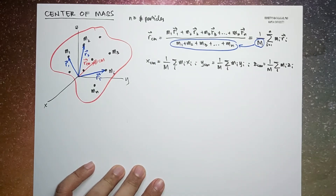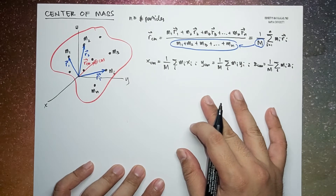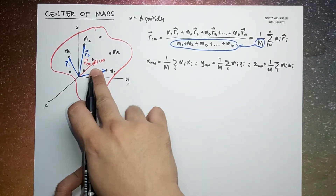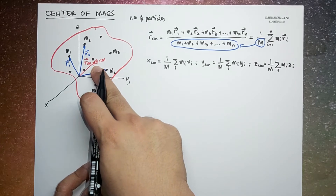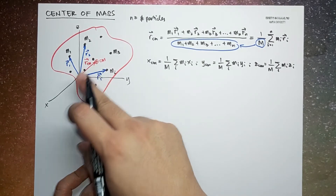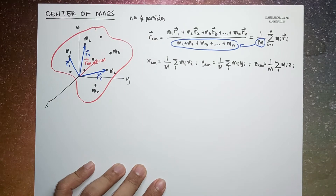We note that the center of mass of a system of particles is uniquely defined, but the position vector of the center of mass will be dependent on the coordinate system that we use.